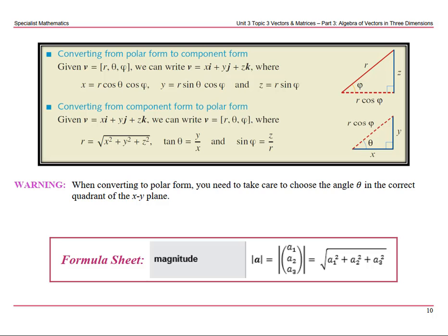Now this is summarized here. The triangles are there, so you can learn the formulas or you can derive them each time. It's up to you. When converting to polar form, you need to take care to choose the angle theta in the correct quadrant of the xy plane. Think about where you are in terms of quadrants. On your formula sheet, your magnitude formula is there.